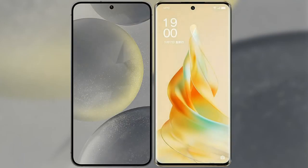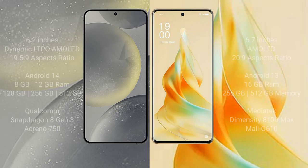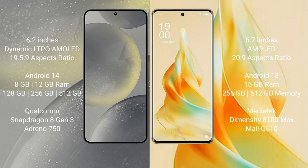I will compare the new Samsung Galaxy S24 with OPPO Reno 9 Pro. Samsung Galaxy S24 comes with a 6.2-inch Dynamic LTPO AMOLED display and Snapdragon processor. OPPO Reno 9 Pro comes with a 6.7-inch AMOLED display and a different processor.